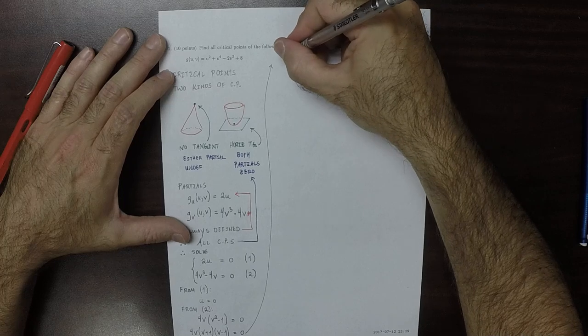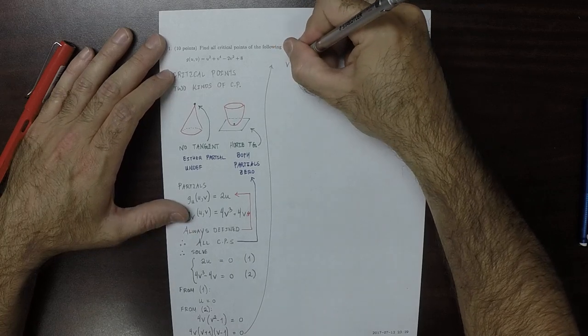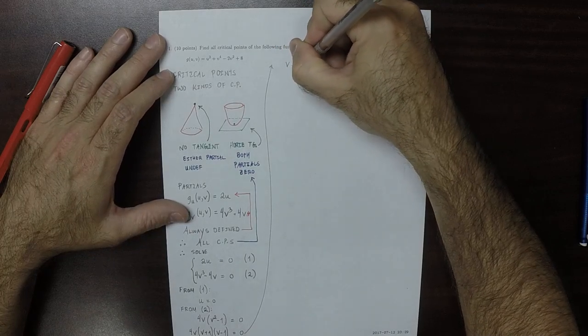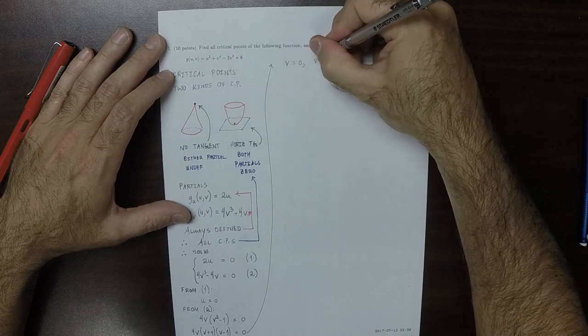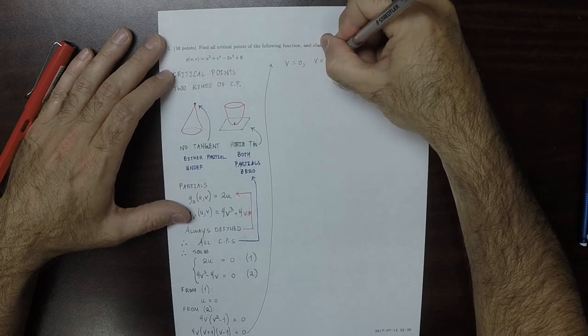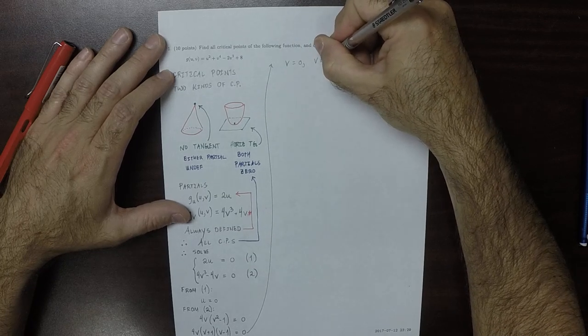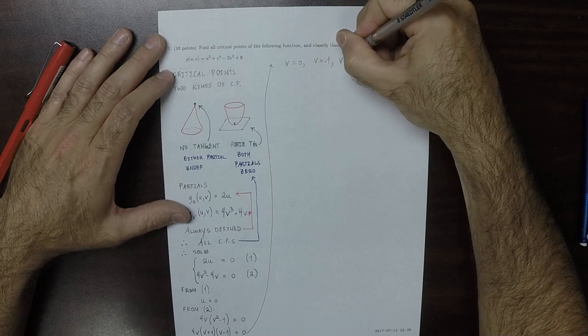And therefore, the solutions are V is zero, V is positive one, V is negative one, and V is positive one.